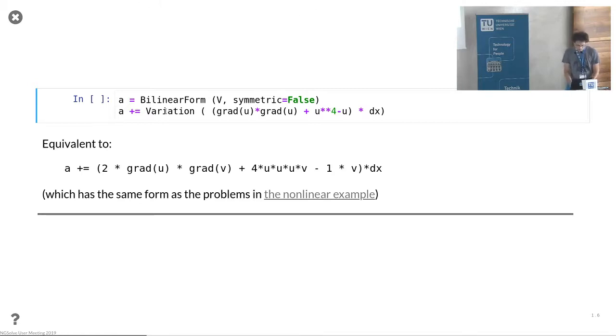Here you can write down variation, so this is the problem now put in very symbolically into your bilinear form. This essentially is equivalent to putting the corresponding PDE problem which is written down here as a nonlinear example, but we do it this way here.